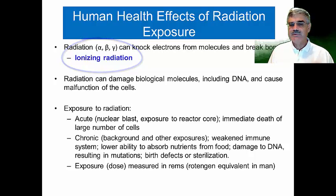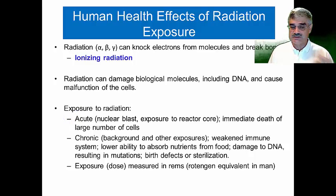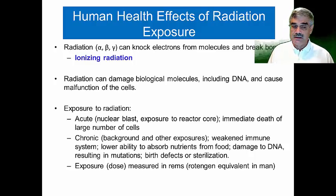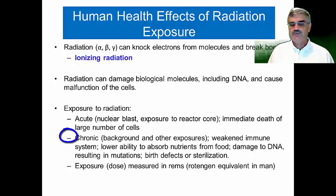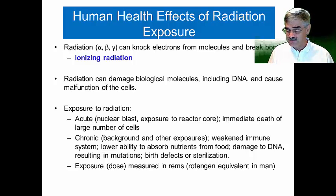If this happens to biomolecules — especially DNA — this can cause malfunctions of the cell or death of cells. With respect to exposure to radiation, we can talk about acute exposure: if you were exposed to radiation as a result of something like a nuclear blast or exposure to a reactor core, this can result in the immediate death of a large number of cells, leading to the death of the human, animal, or plant. You can also have chronic exposure — day-to-day, multiple exposures over a period of time. These accumulate and can lead to a weakened immune system, reduced ability to absorb nutrients, damage to DNA, which can result in mutations, birth defects in offspring, or sterilization.